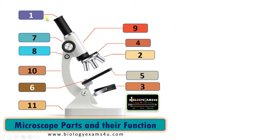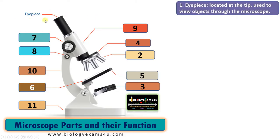Let's begin with the optics of the compound microscope, starting with the eyepiece. The eyepiece is located at the tip of the microscope. It is used to view objects through the microscope — we place the specimen on the stage and view using this eyepiece, which is why it is called the eyepiece. It's also called the ocular. The eyepiece has a lens, and the magnification may be 5x, 10x, or 15x. 5x means five times magnified.